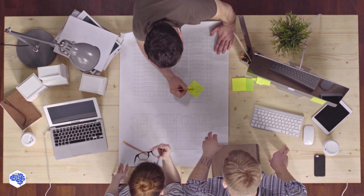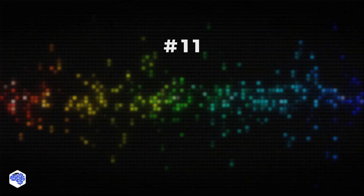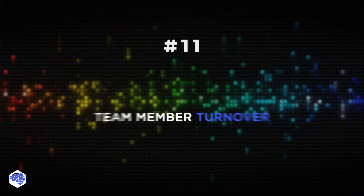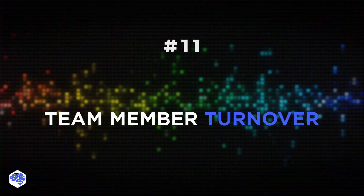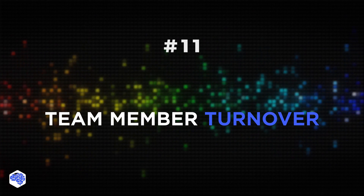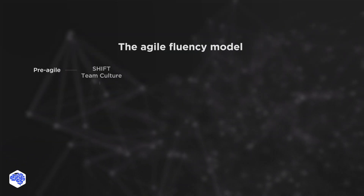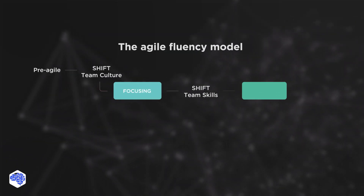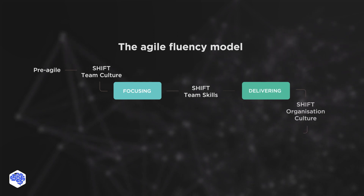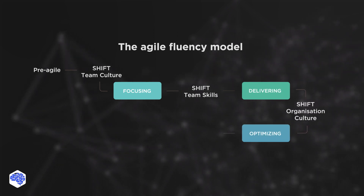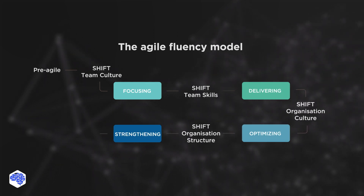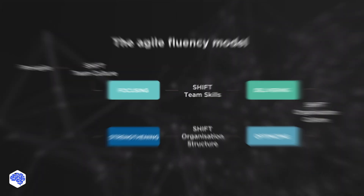The last health metric is team member turnover. If team managers frequently replace team members, it likely means the work environment is unhealthy. A certain rate of turnover over time is healthy, but you should watch out for sudden spikes in activity.